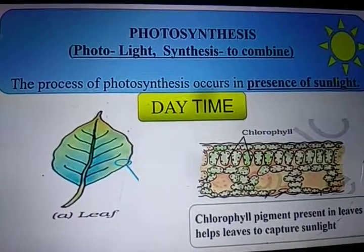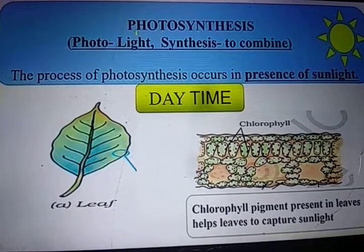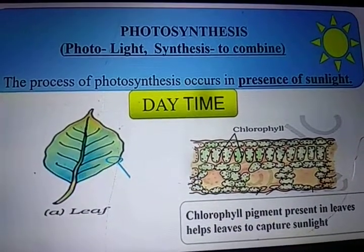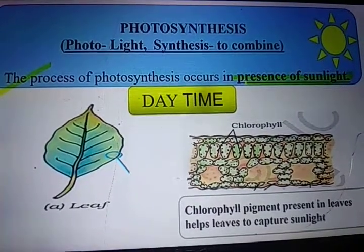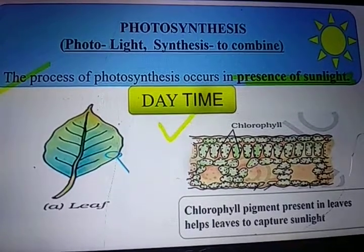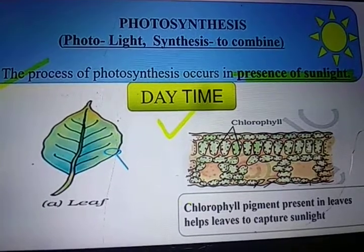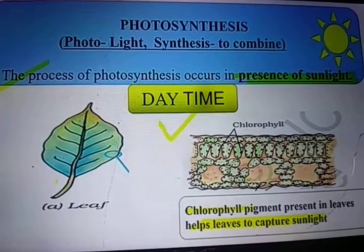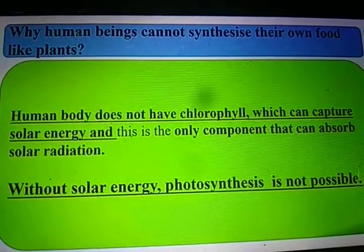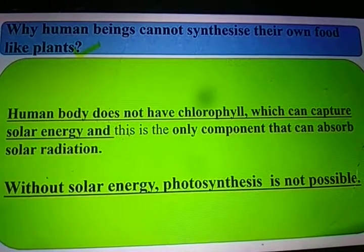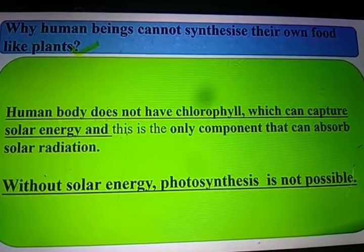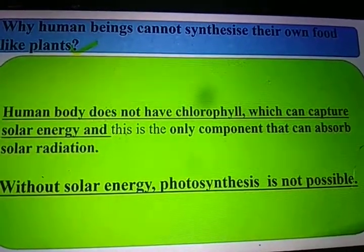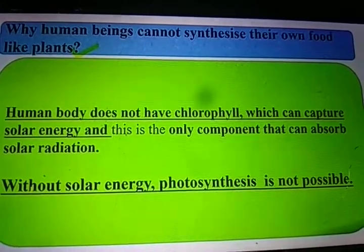Now it's time to understand photosynthesis in detail. The process of photosynthesis occurs only in the presence of sunlight, so it takes place only during daytime. Plants have numerous green pigments known as chlorophyll, which help leaves to capture sunlight. This is why human beings cannot synthesize their own food like plants — because the human body does not have chlorophyll, which is the only component that can absorb solar radiation.